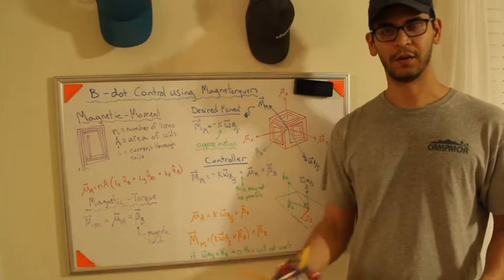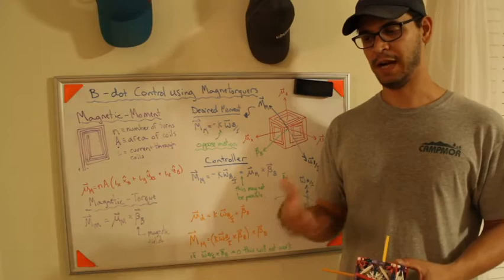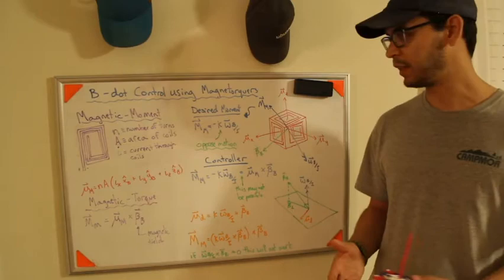We've gone over the translational dynamics where it's going around the Earth. We've talked about the rotational dynamics as it rotates using quaternions, which may or may not make sense. And then we've also talked about sensor dynamics, so bias, noise, and how to filter that with some complementary filters. And then if you want to get into Kalman filters you can, but I'm not going to go over that.